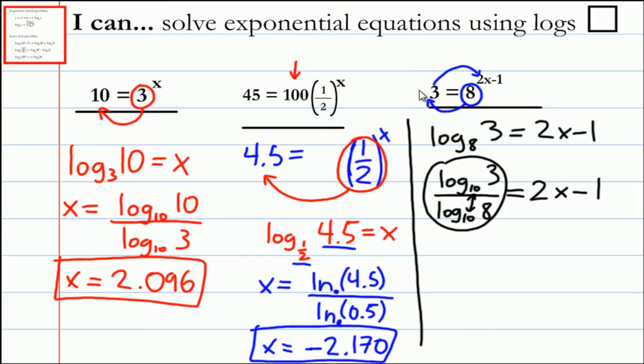Now we have a number equals 2 times x minus 1. It's very similar to a question like 4 equals 2x minus 1, just solve for x. In order to do that, you would subtract 1 from both sides: log of 3 divided by log of 8 minus 1 equals 2x. I dropped the tens there because it's just quicker to write.